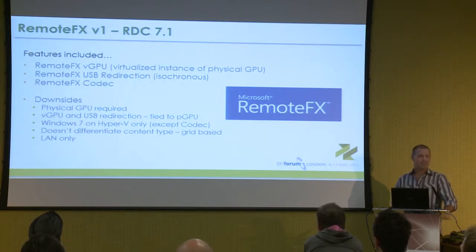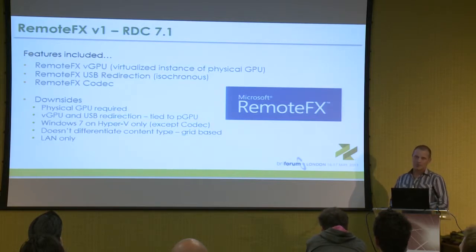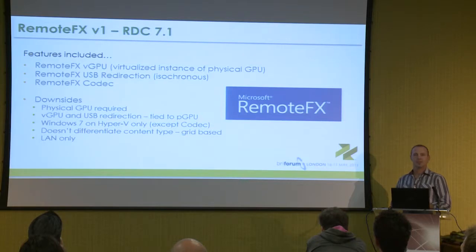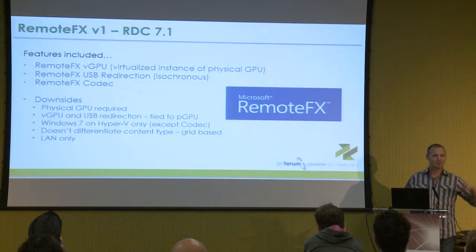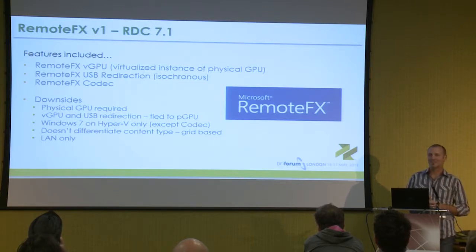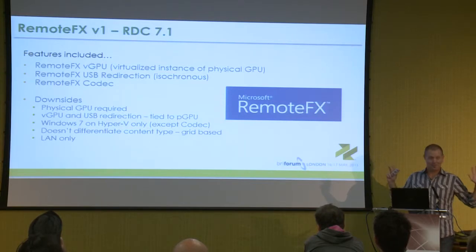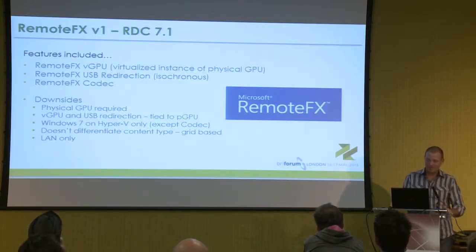That codec was actually the only thing you could take advantage of in RDS - a session-hosting model - versus a VDI or VM-based model. One of the biggest downsides is that a physical GPU is required. Do you think it makes sense today to go out and drop six grand on one of those big turbo cards? I'm going to go out and drop four or five grand on a blade or 1U and then throw a six-thousand-dollar video card in there - how many additional users does that get me?